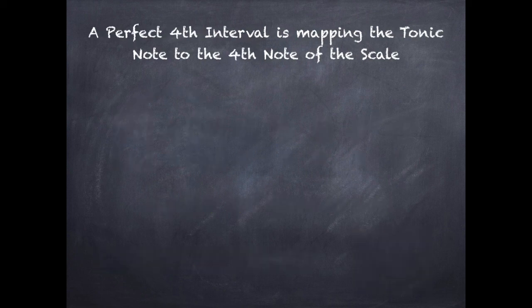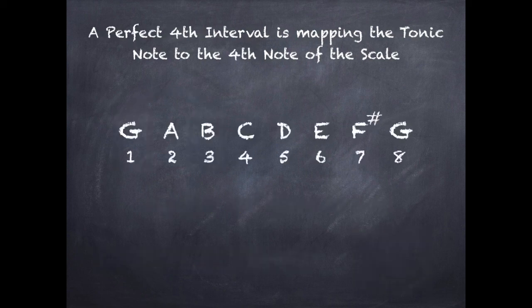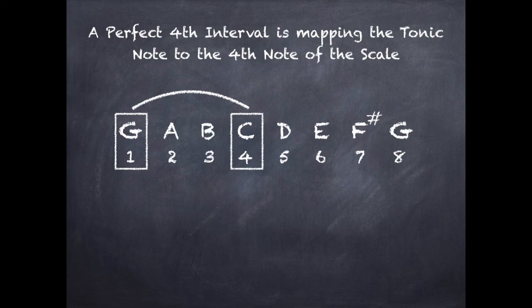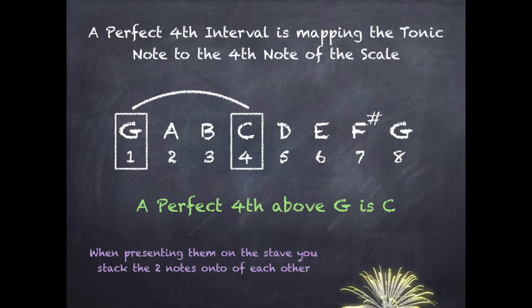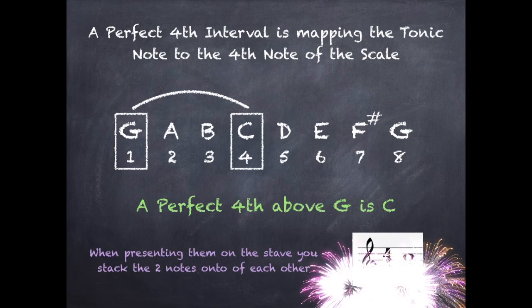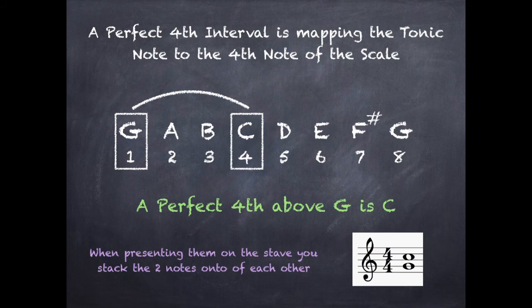A perfect fourth interval maps the tonic note to the fourth note of the scale. So with the G major scale, I go from the first note, G, to the fourth note, C. A perfect fourth above G is C. When presenting them on the stave I stack them on top of each other. You can see a pattern emerging.